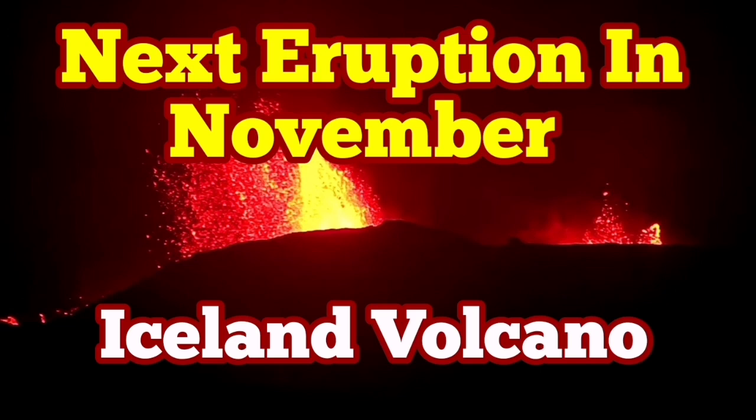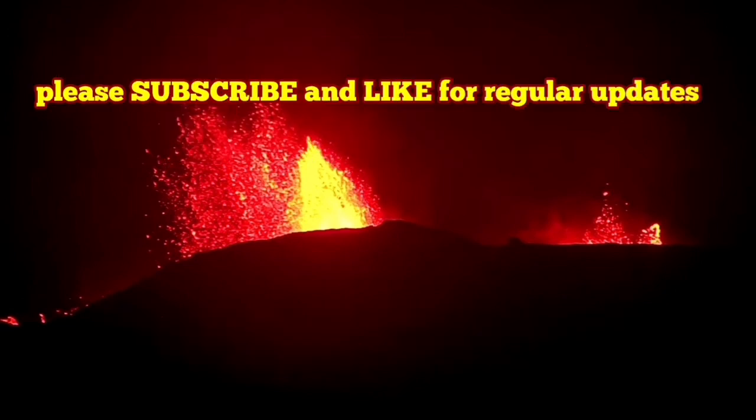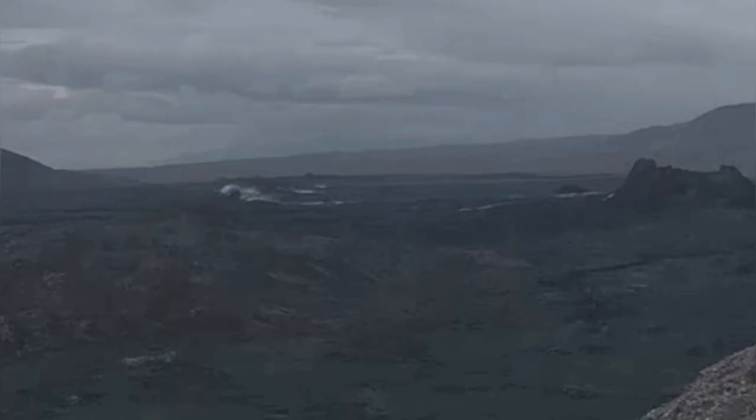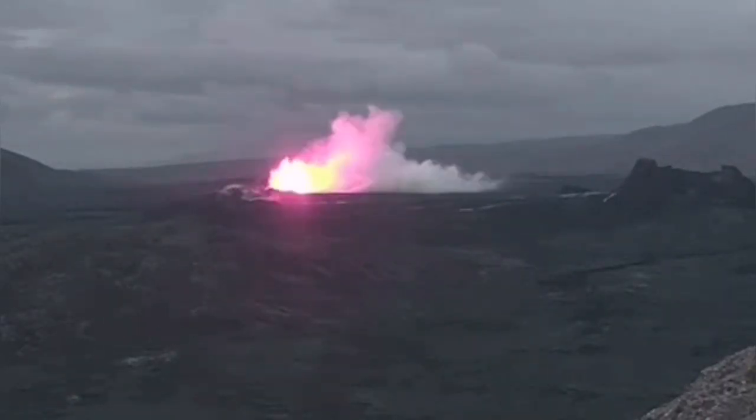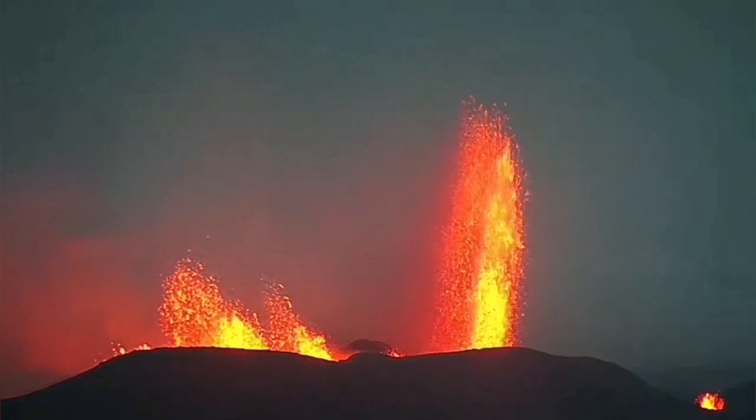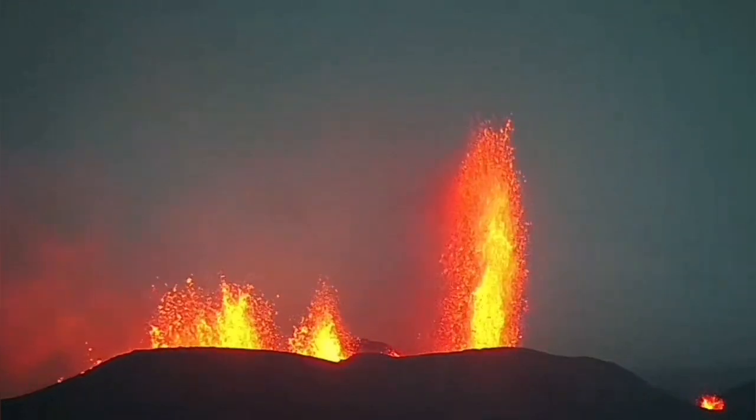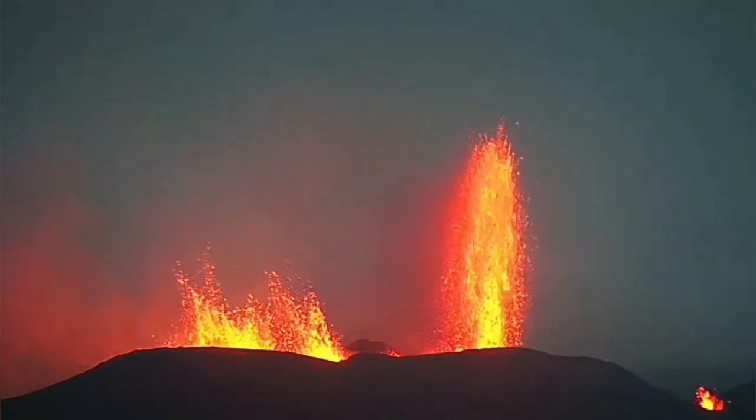The sixth eruption of the Svartsengi volcanic system in the Reykjanes Peninsula of Iceland started vigorously and created huge fountains up to 175 meters tall. In the night you could see them from far distance.